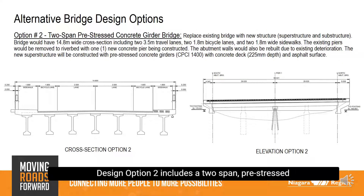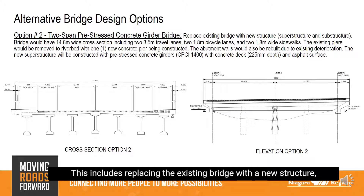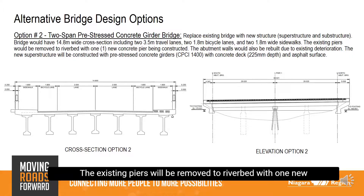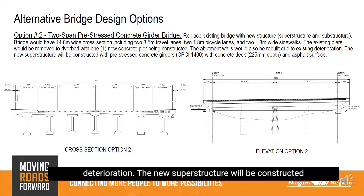Design Option 2 includes a two-span pre-stressed concrete girder bridge, replacing the existing bridge with a new structure — both superstructure and substructure. The bridge would have a 14.8-meter wide cross section, including two 3.5-meter wide travel lanes, two 1.8-meter wide bicycle lanes, and two 1.8-meter wide sidewalks. The existing piers would be removed to riverbed with one new concrete pier constructed, and the abutment walls would also be rebuilt due to existing deterioration. The new superstructure will be constructed with pre-stressed concrete girders with concrete deck and asphalt surface.